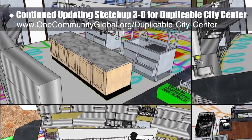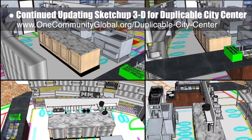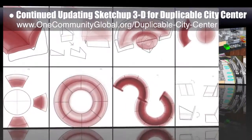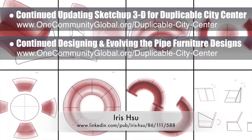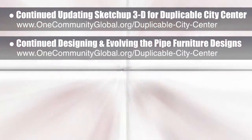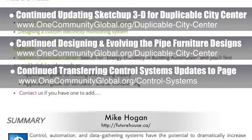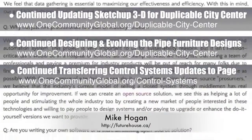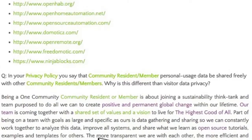This week we added extensive details to the kitchen area to match the AutoCAD layout. Once done and double checked, we'll be able to create beautiful renders of these areas. We'd say we're now 60% done with this 3D work. Iris Hsu, industrial designer, continued developing and evolving the pipe furniture designs. What you see here are the fourth generation concept designs for the chairs, tables, and couches that will be in the duplicable city center library. We also continued transferring and editing updates to the control systems automation page, adding our privacy policy and updating the FAQ — about 75% complete with the total page redesign.